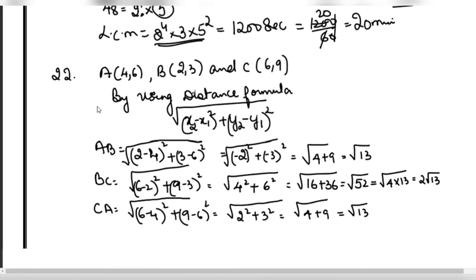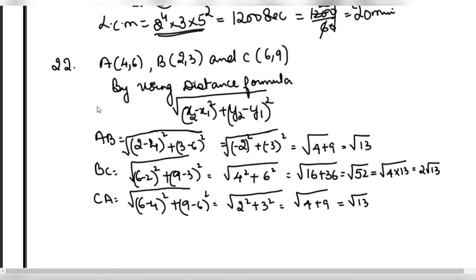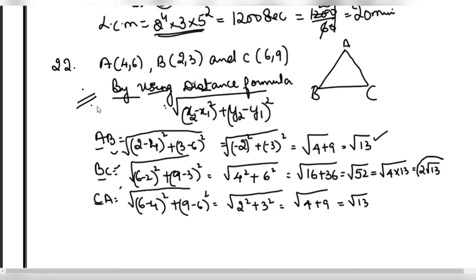Next question 22. We have to check whether the triangle is formed. A, B, C taken in order. We will use distance formula. This step is very important, you have to write the formula you are using. Finding AB, BC, and CA. By using distance formula, AB equals root 13, BC equals 2 root 13, and CA equals root 13.